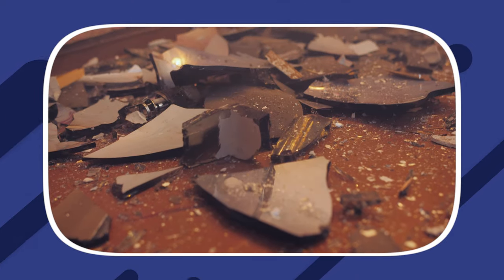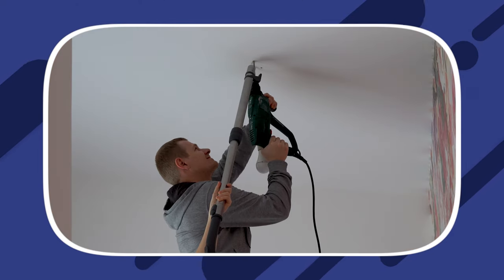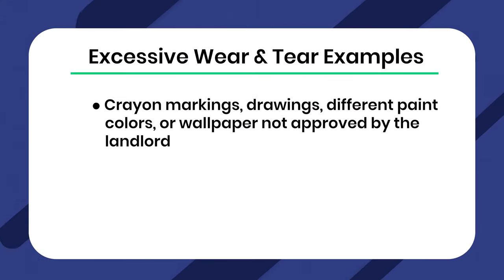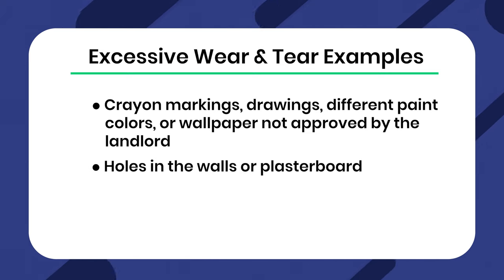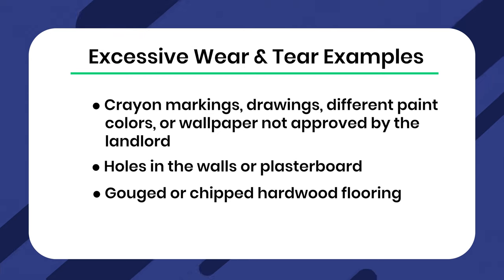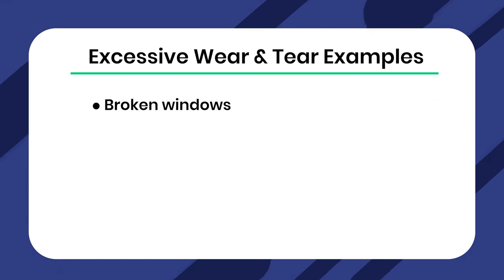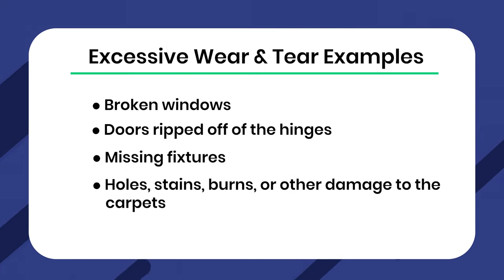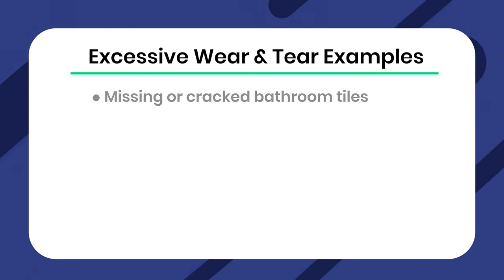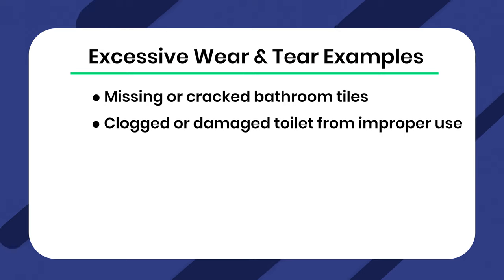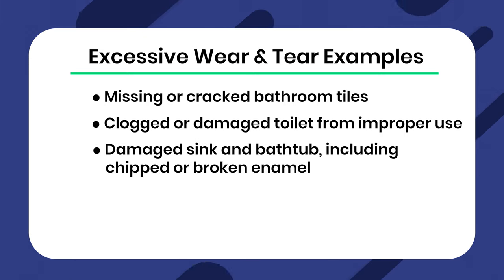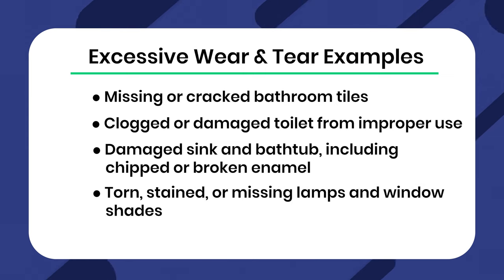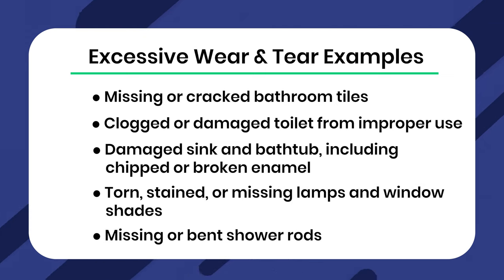If a tenant caused damage, the tenant must pay to replace or repair it as opposed to normal wear and tear. Examples of negligence on the tenant's behalf include: crayon markings, drawings, different paint colors or wallpaper not approved by the landlord; holes in the walls or plasterboard; gouged or chipped hardwood flooring; heavily damaged or ruined wallpaper; broken windows; doors ripped off the hinges; missing fixtures; holes, stains, burns, or other damage to carpets; holes in the ceiling; missing or cracked bathroom tiles; clogged or damaged toilets from improper use; damaged sink and bathtub including chipped or broken enamel; torn, stained, or missing lamps and window shades; and missing or bent shower rods.